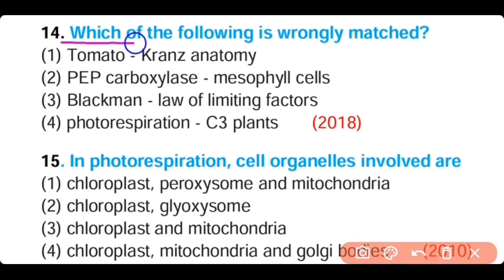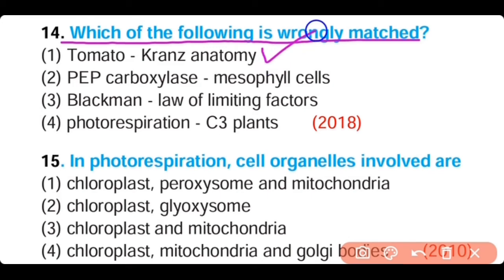Question number 14. Which among the following is wrongly matched? Tomatoes have Kranz anatomy; phosphoenol pyruvate carboxylase works in mesophyll cells; Blackman presented the law of limiting factors; or photorespiration is present in C3 plants. The correct answer is option 1. Tomato is not a C4 plant, so it has no Kranz anatomy — option 1 is wrongly matched.